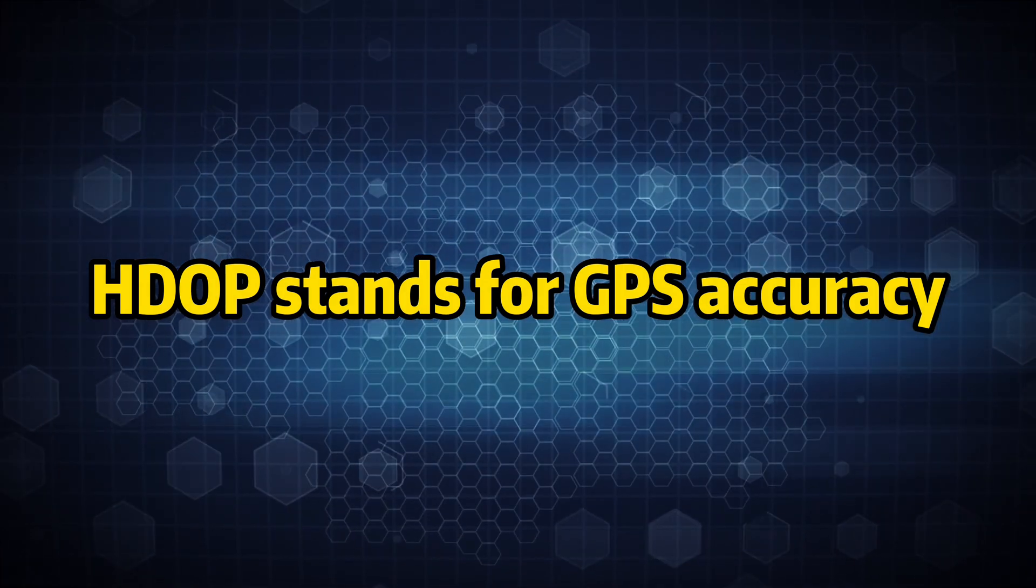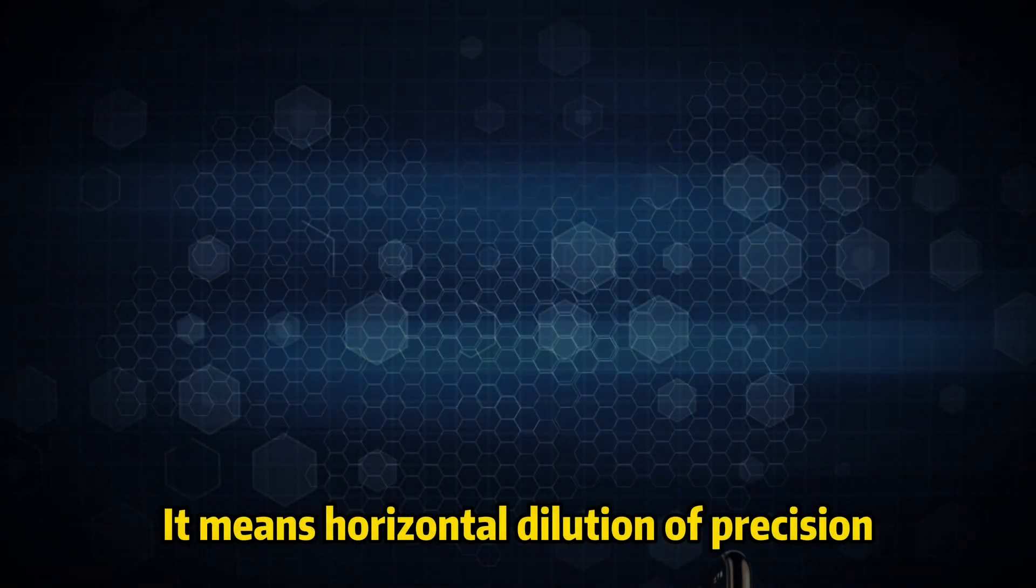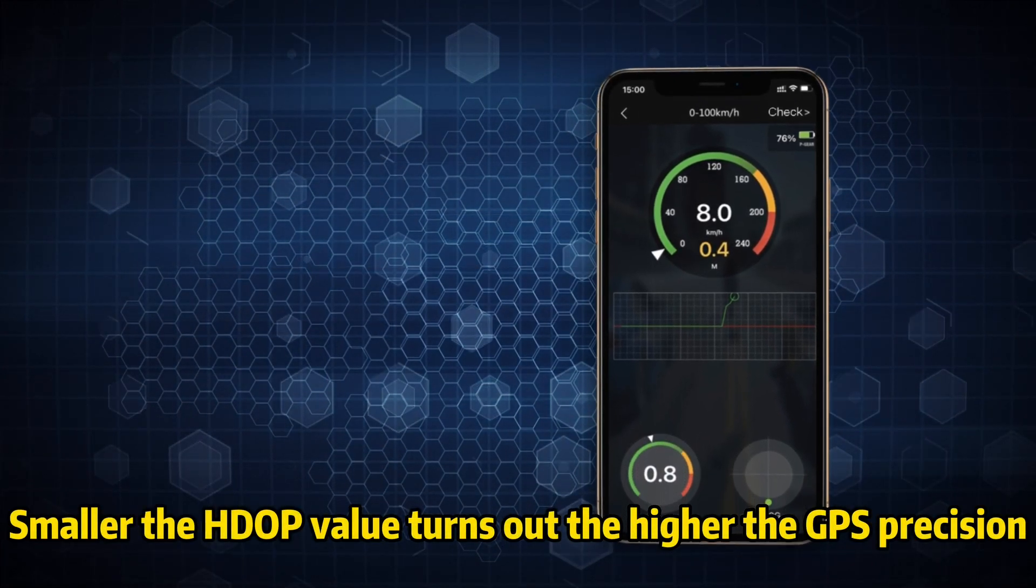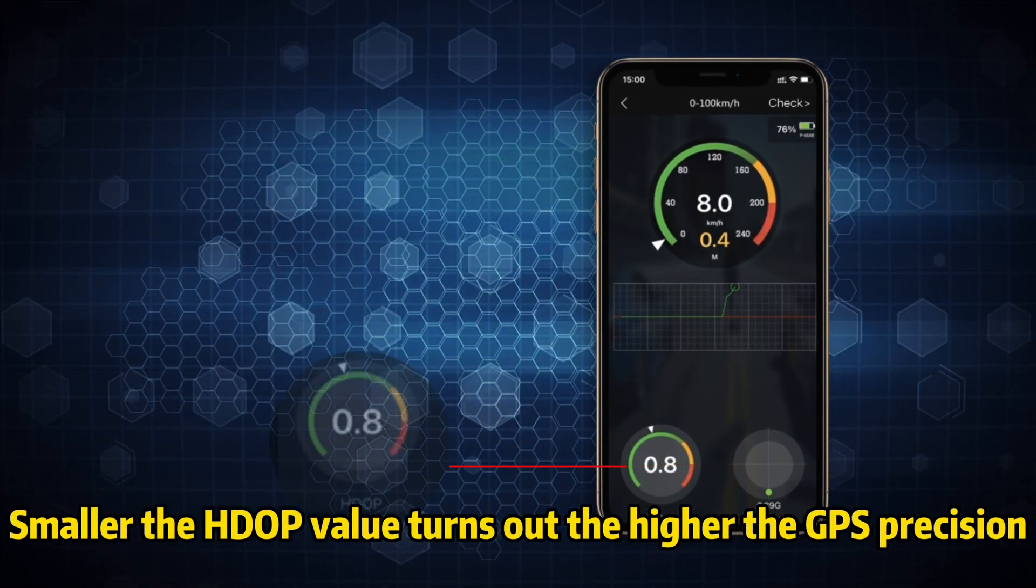HDOP stands for GPS accuracy. It means horizontal dilution of precision. The smaller the HDOP value, the higher the GPS precision.